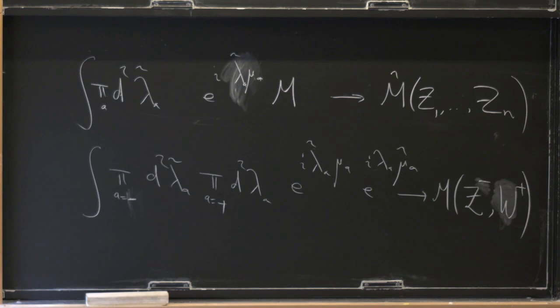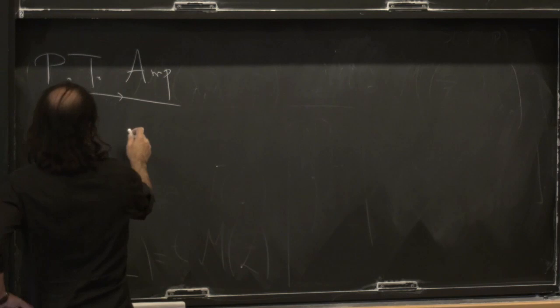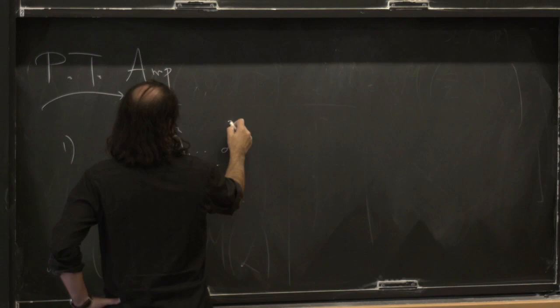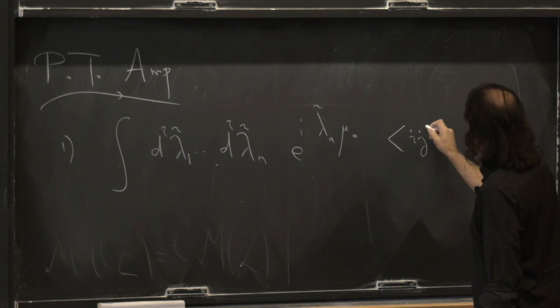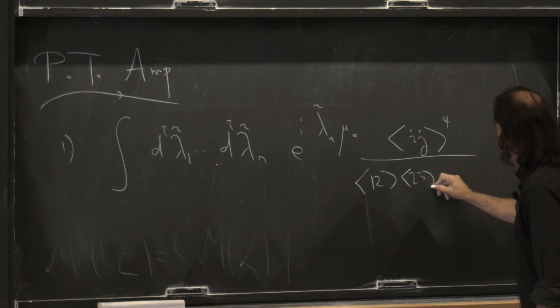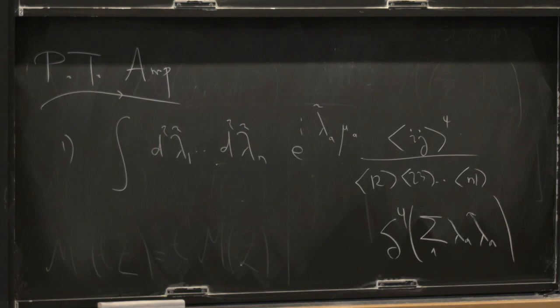Historically, this is what Witten started doing in 2003. So let's do our first simplest example of that, and already we're going to see something very cool. So let's take the Park-Taylor formula and take it to twistor space via method 1. I want to take integral d²lambda-tilde_1 through d²lambda-tilde_n, times e^{i lambda-tilde_a mu_a}, times angle-bracket ij angle-bracket to the 4th over angle-bracket 1,2 angle-bracket...angle-bracket n,1 angle-bracket, times delta of sum_a lambda_a lambda-tilde_a.